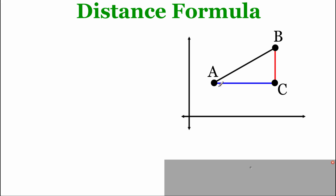I'm going to focus first on this blue length that runs from point A to point C. I want to figure out how long that is. Since it's a flat horizontal segment, I'm going to focus on the x-values of those points because x-values move us left and right. To find the length of this blue segment, I'm going to use the absolute value of x2 minus x1 — that would be the length from A to C.